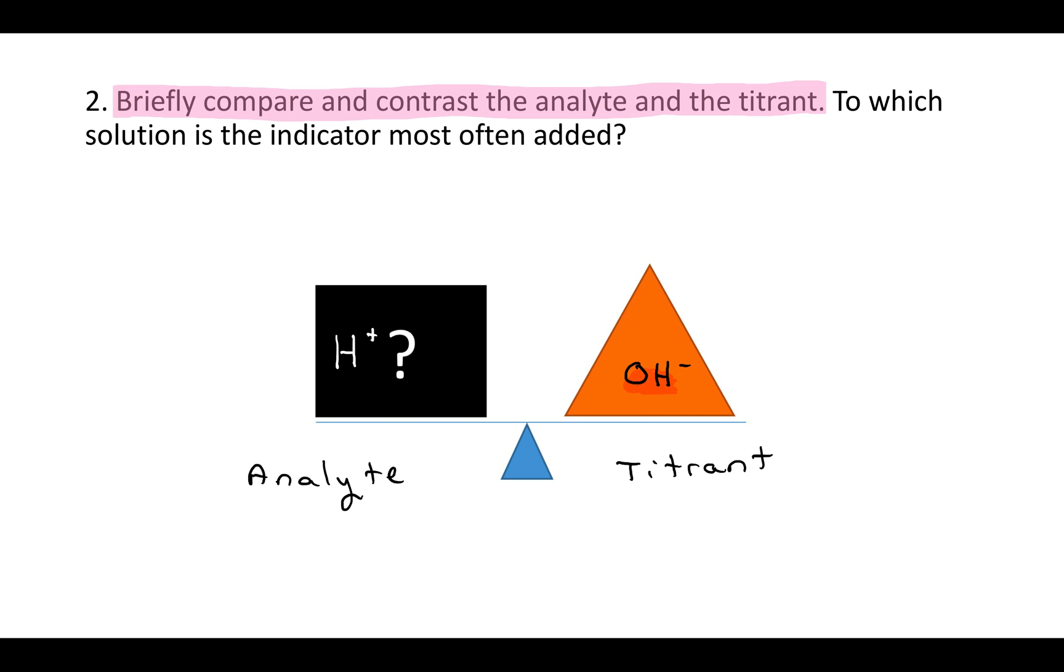In the titration, the unknown that you're analyzing is called the analyte, and the known amount of OH minus that you're adding is called the titrant. That's the first characteristic between these two. The analyte has an unknown concentration. That's what we're trying to find out. And the titrant has a known concentration. That's what we're going to use to find out the concentration of the analyte.